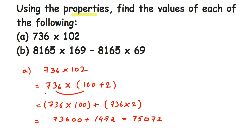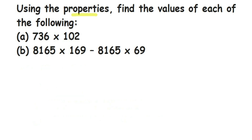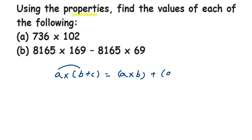The second question also uses the distributive property, but it's a little different. The distributive property is: a × (b + c) = a×b + a×c. In this second question, we have a minus sign. We can take minus instead of plus — that is distributive property over subtraction: a × (b − c) = a×b − a×c.